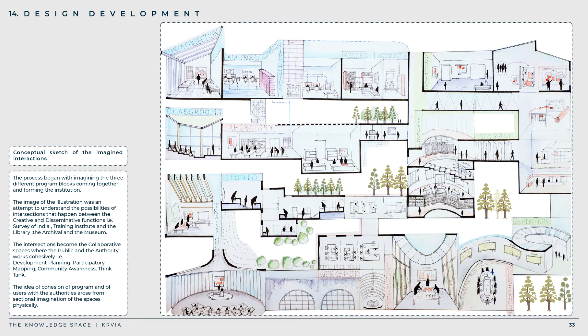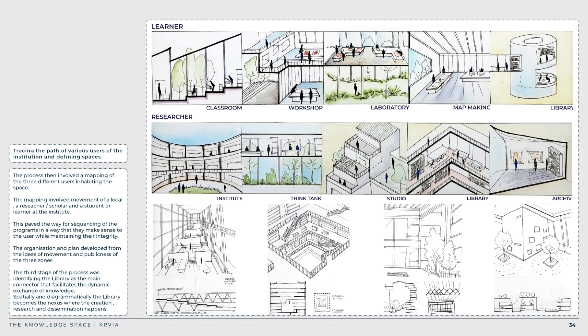These intersections become the collaborative spaces where the public and the authority work cohesively. The idea of cohesion of program and user with authority arose from sectional imagination of the spaces. Physically, the mapping of movements of different users inhabiting the space paved the way for sequencing of programs so they make sense to the user while maintaining their integrity. The third stage of the process was identifying the library as the main connector that facilitates the dynamic exchange of knowledge — spatially and diagrammatically, the library becomes the nexus where creation, research, and dissemination happens.